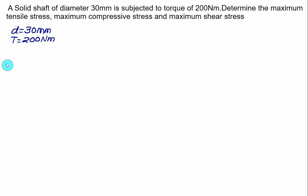For pure torsion, we can quickly calculate τ_max, and then σ_max = σ_min = τ_max. Example: A solid shaft of diameter 30 mm is subjected to a torque of 200 N·m. Calculate the maximum tensile stress, maximum compressive stress, and maximum shear stress. Given d = 30 mm and T = 200 N·m, from the torque formula T = (π/16) × d³ × τ_max, the value of τ_max is the same as τ_xy.